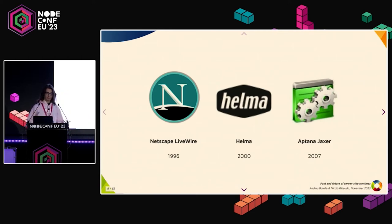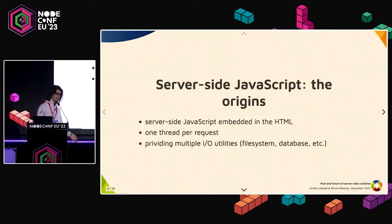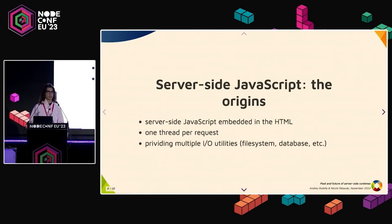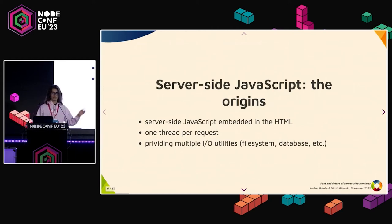Nobody talks about this anymore, but they were the engines that first brought JavaScript to the server. And they had something in common that was completely different from how Node.js is nowadays and how all the other runtimes work. They were more similar to PHP — you were embedding some JavaScript in the HTML, and that was then executed to replace some pieces of the HTML. You had one thread per request, so you didn't have to worry about handling requests asynchronously. You just had your HTML file with some JavaScript, the server ran that file in a thread synchronously, got the result, and sent it to the browser.